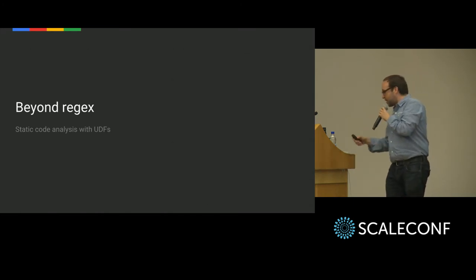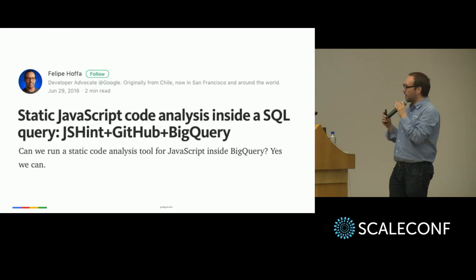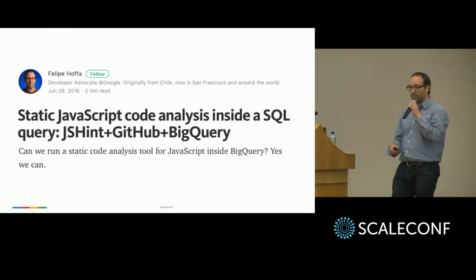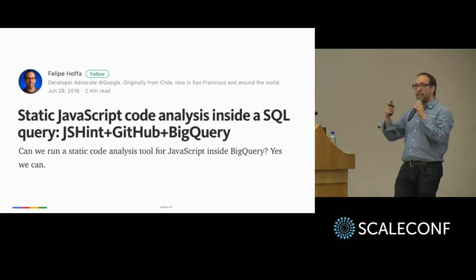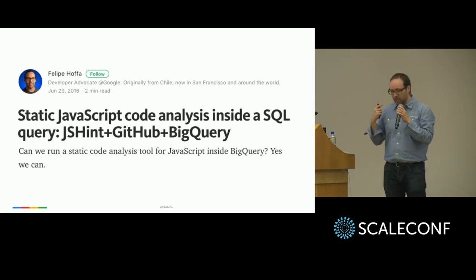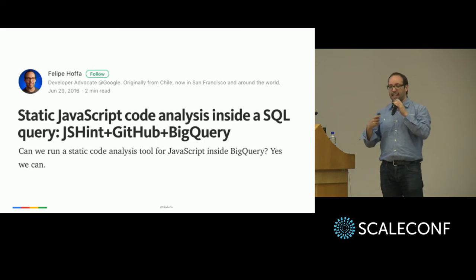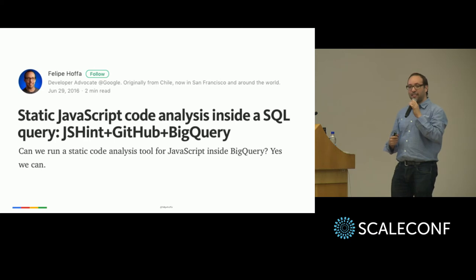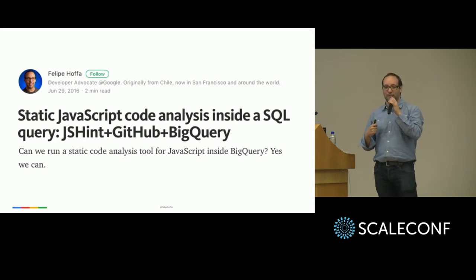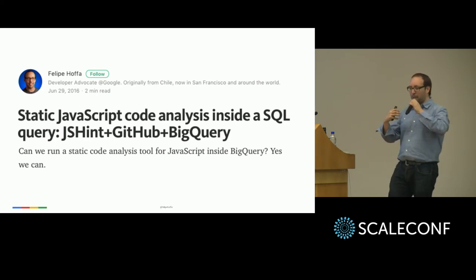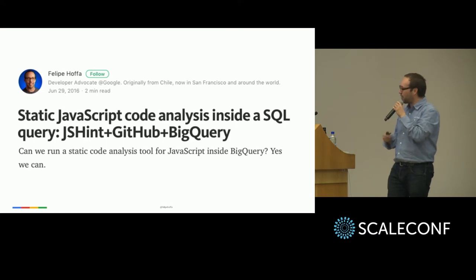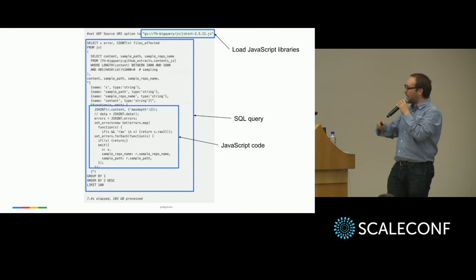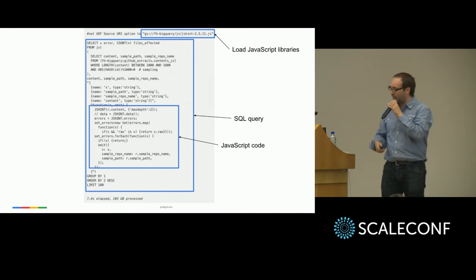You can go beyond regular expressions. For example, how do we run static code analysis over all of this code? I found a library on GitHub called JSHint that runs static code analysis over JavaScript. The good news is that BigQuery also runs JavaScript — in the middle of your SQL queries, you can run any arbitrary code. This is a query with JavaScript in the middle of it, and these are the top warnings: missing semicolons, 'when you expected A and instead saw B,' blocks nested too deeply.